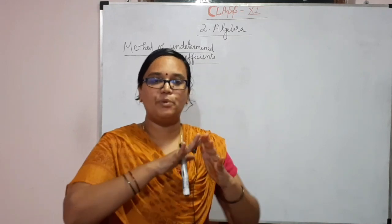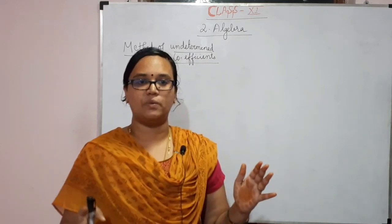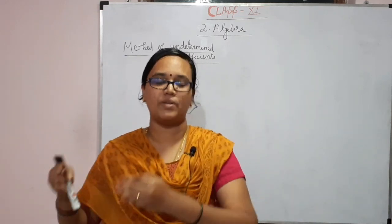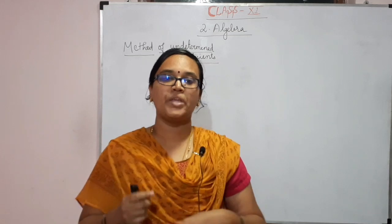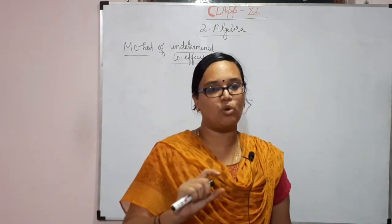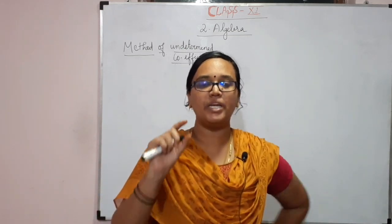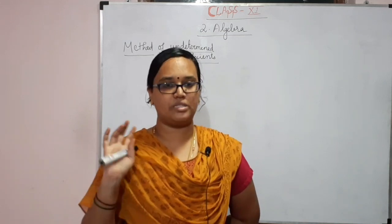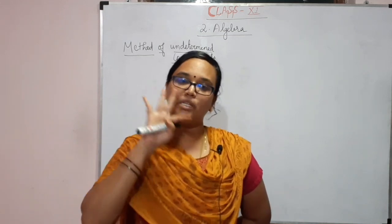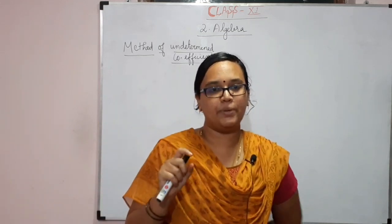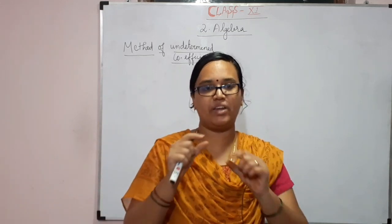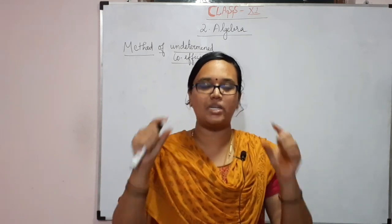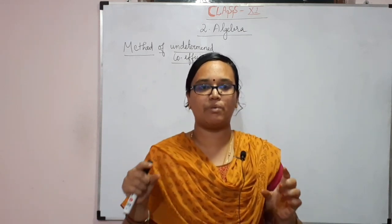For example, let's take a quadratic equation: ax squared plus bx plus c. Here, a is a coefficient, b is a coefficient, and c is a constant. With three terms, we can frame and construct a quadratic polynomial equation.